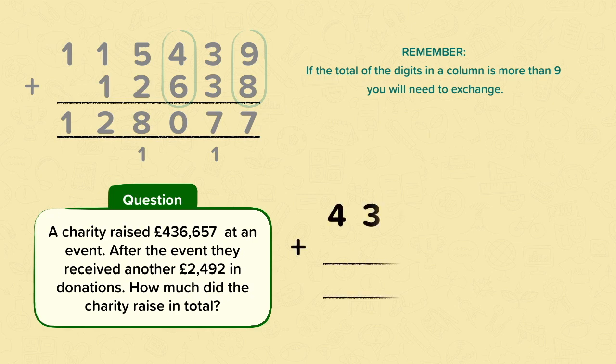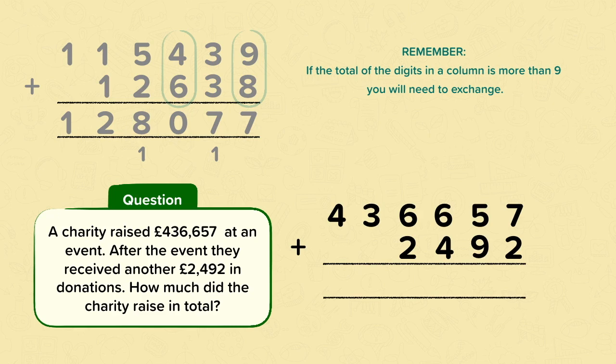Well done. If you set out your calculation like this, you should have started at the ones. Seven add two is nine. Onto the tens. Here you should have exchanged because the total of the digits in this column is greater than nine. Five add nine is fourteen. So you should have put the four in the tens column and exchanged the ten tens into a hundred. Six add four. Again, that's greater than nine. So you're going to need to exchange. But also remember that you've got the extra one hundred that you need to add, which was exchanged from the tens. So all together, you've got eleven hundreds. Put the one from the eleven in the hundreds place and you exchange those ten hundreds for a thousand, which goes in the thousands place. Six add two is eight. Add the extra thousand, that's nine. And then onto the ten thousands place, it's just the three. And onto the hundred thousands place, it's just four. So very well done if you got the answer, £439,149.